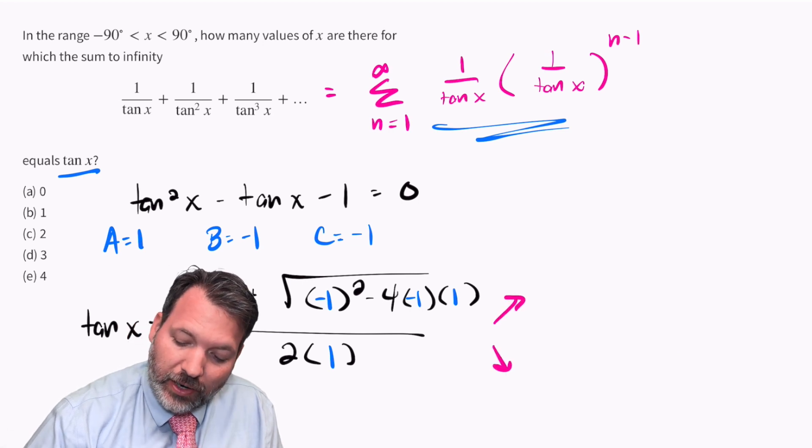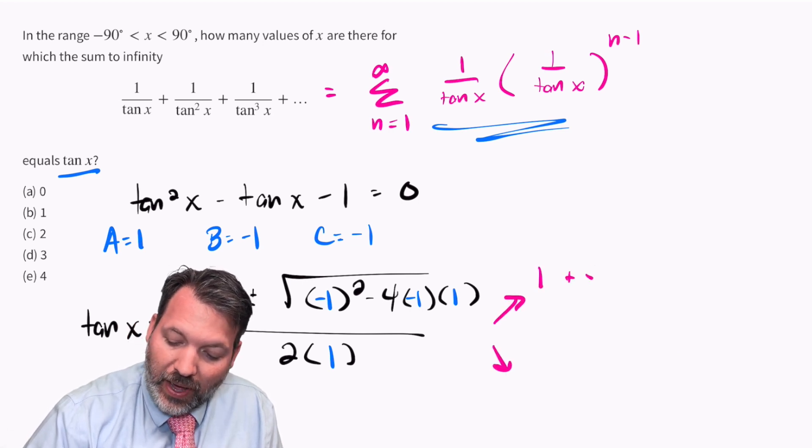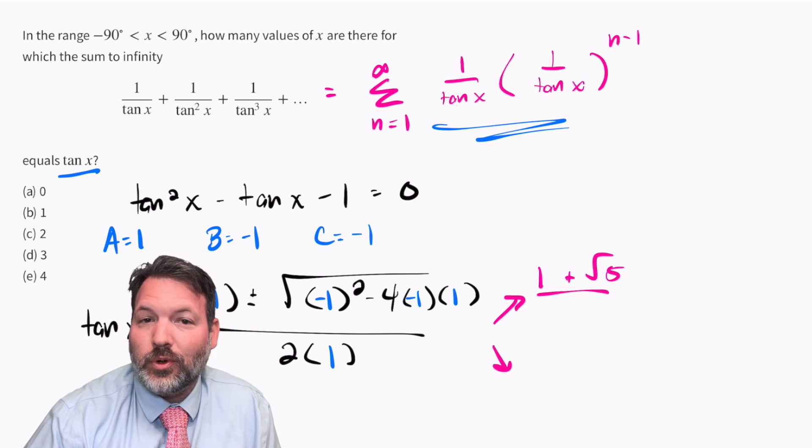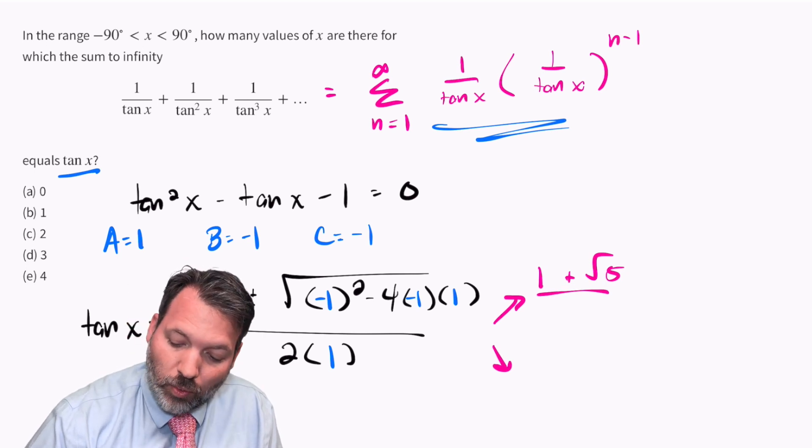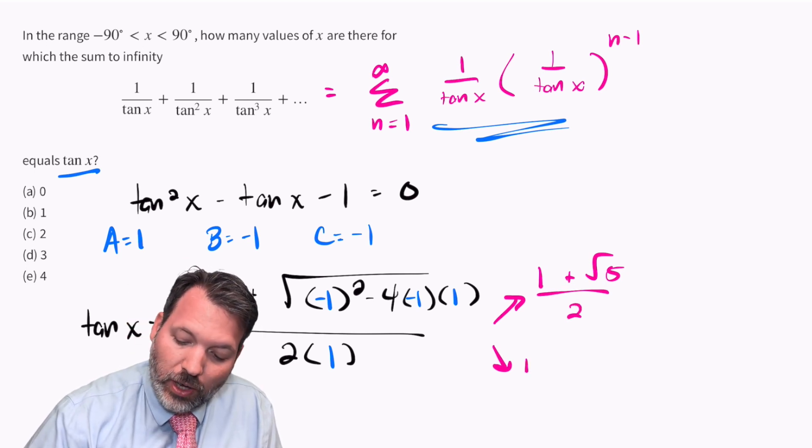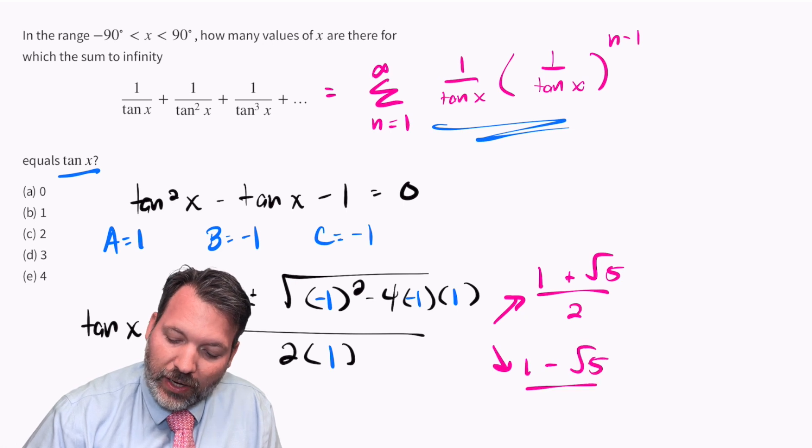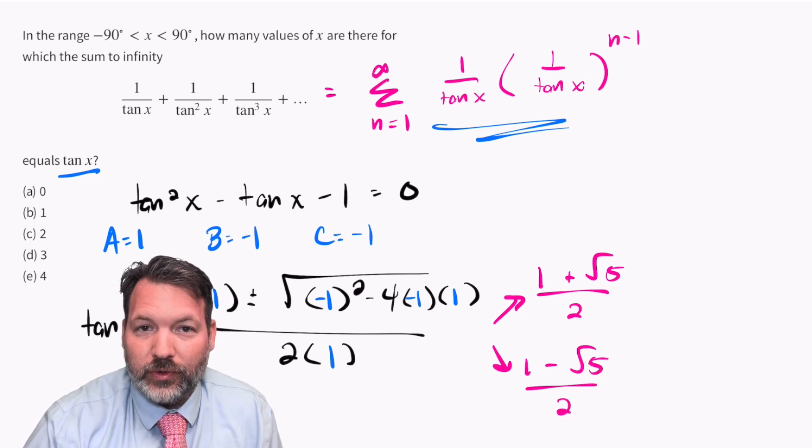As is typically the case with the quadratic formula, this ends up giving us back two values. Either this will be true where tangent x equals 1 plus root 5 over 2, or it will be true where tangent x equals 1 minus root 5 over 2.